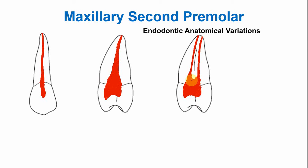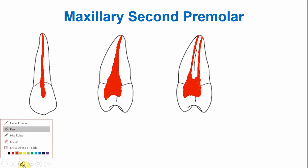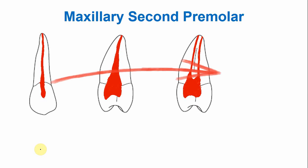Now let's discuss the cross section of this tooth — the cross section at the cervical area first. In the cervical area, the cross section of the tooth is oval in shape. This is the buccal side and this is the lingual side, sometimes also referred to as the palatal aspect. The canal at the cervical area is oval and centered within the root.